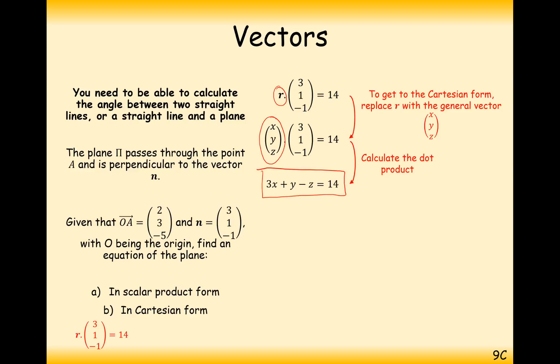So the scalar product form and the Cartesian form are really closely linked. It's really easy to convert between the two. And if we wanted to convert backwards, and we didn't know this result up here, we'd just take 3, 1, minus 1 as the coefficients. And that would be our n vector. X, y, z would be the r vector, and we'd convert that into an r. Really easy to convert between the scalar product and Cartesian form.